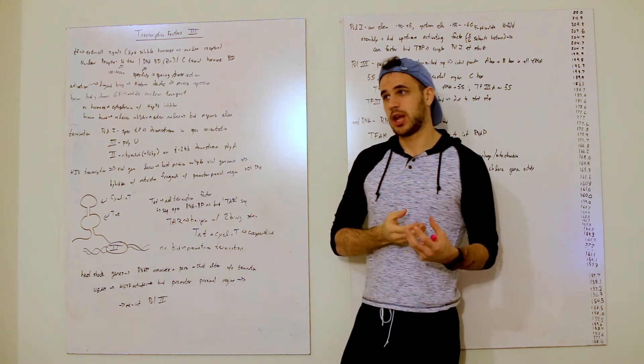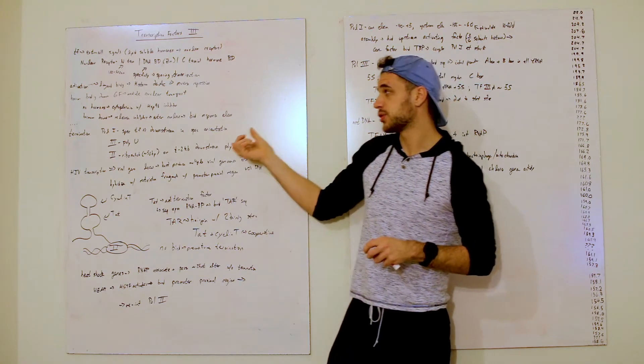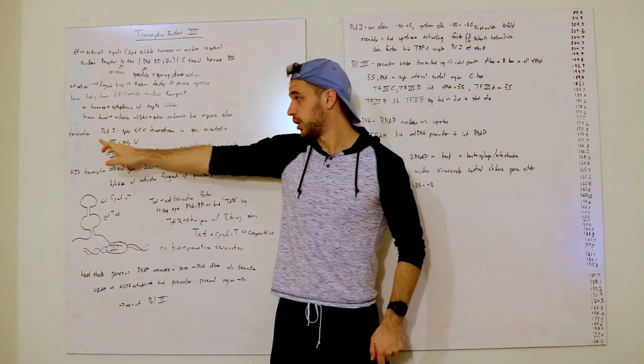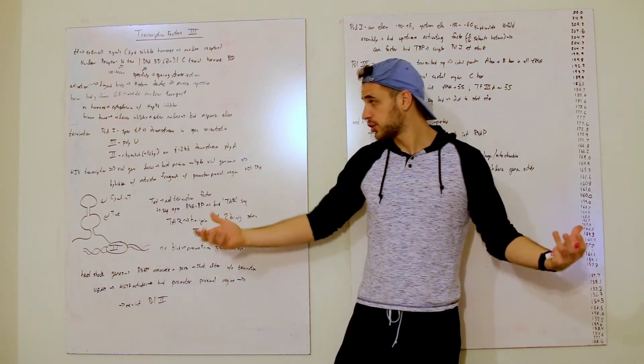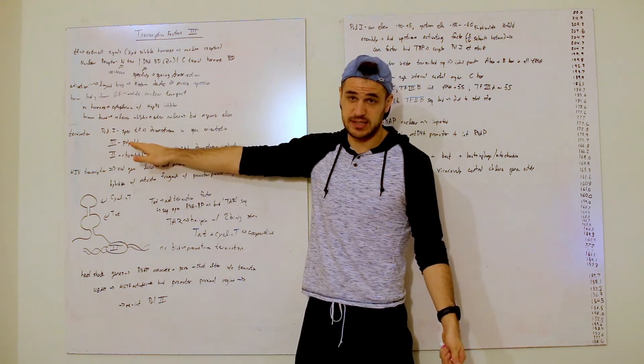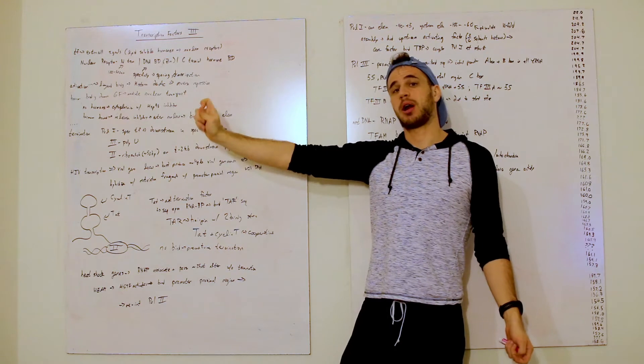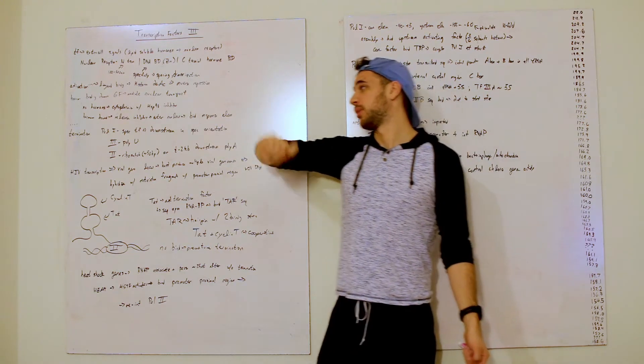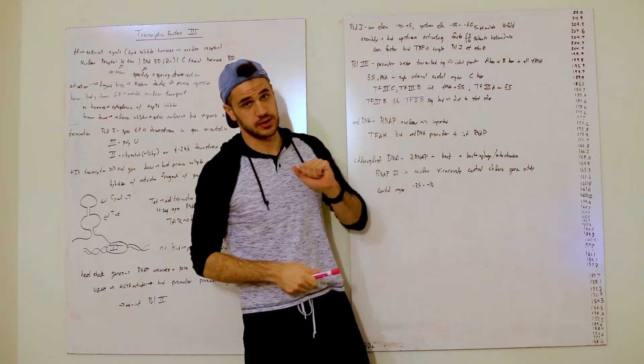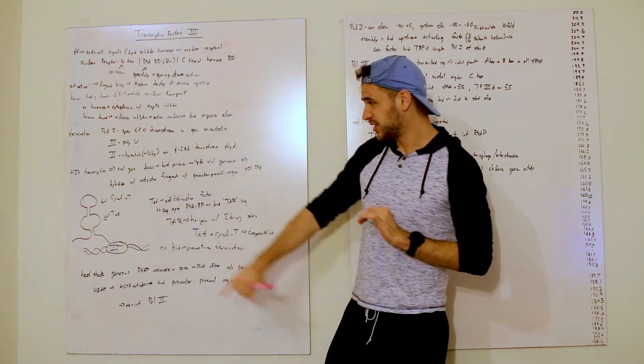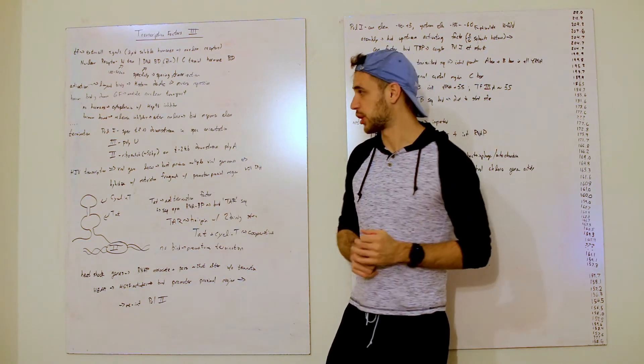So now we're going to change directions a little bit and just talk about how the termination of polymerases occurs, which we have polymerase 1, 2, and 3. Now real quick refresher, polymerase 1 primarily does rRNA, polymerase 3 primarily does tRNA as well as the 5S rRNA, and 2 makes proteins, the things that we care about, the way-level ways that fold into complex structures.